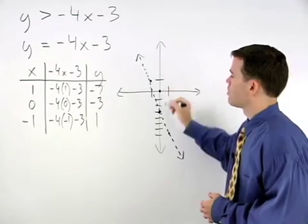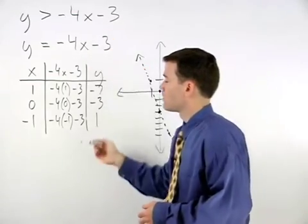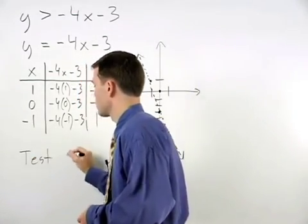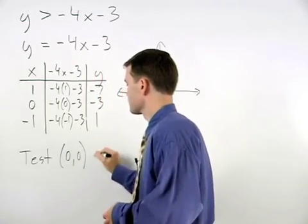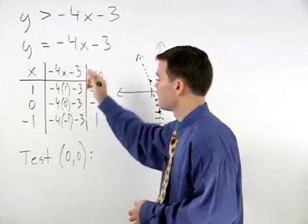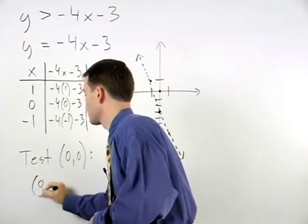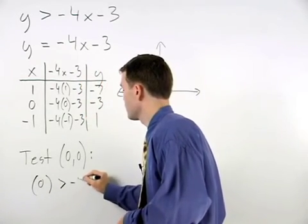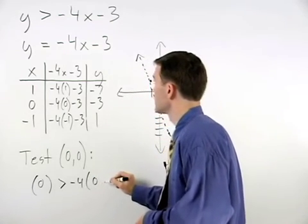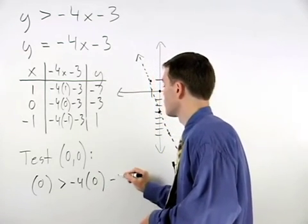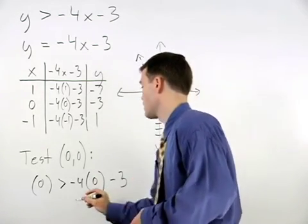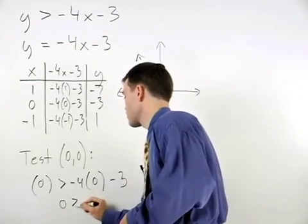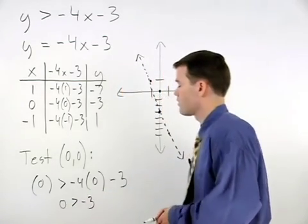So plugging 0, 0 back into the original inequality, we have 0 is greater than negative 4 times 0 minus 3, or 0 is greater than negative 3.